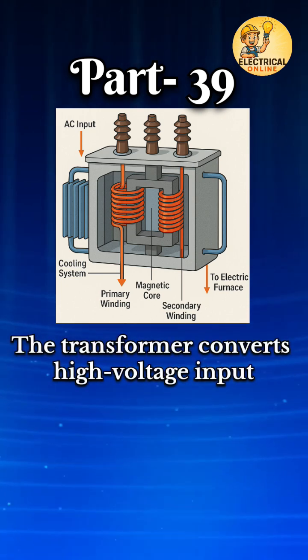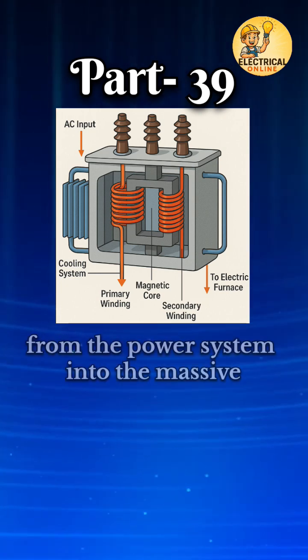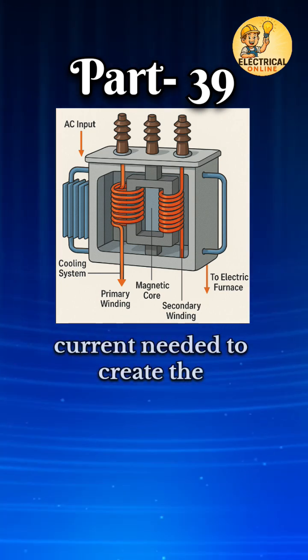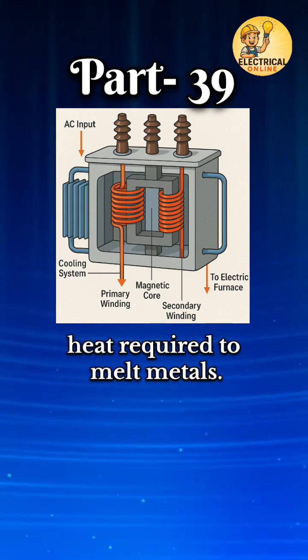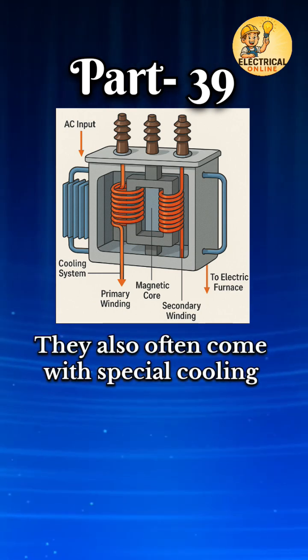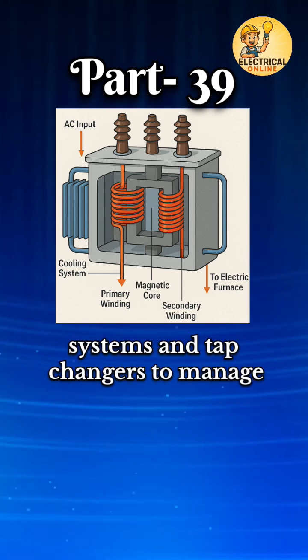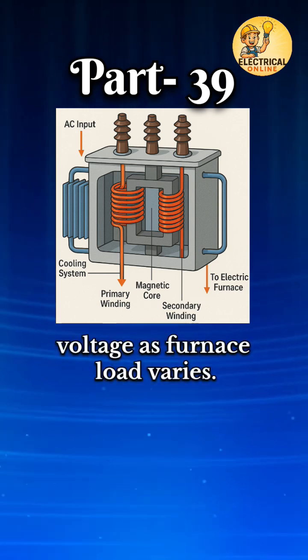The transformer converts high-voltage input from the power system into the massive current needed to create the heat required to melt metals. They also often come with special cooling systems and tap changers to manage voltage as furnace load varies.